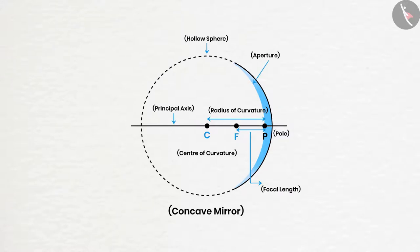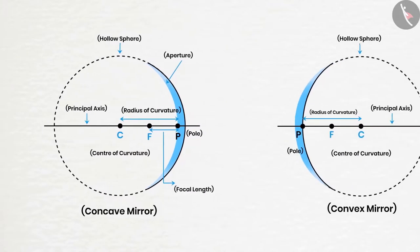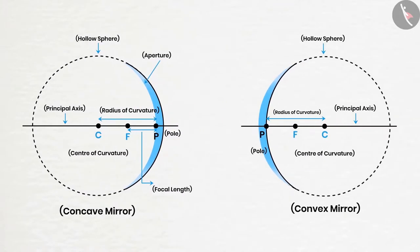One should keep in mind that radius of curvature is twice the focal length. Like focus, all these points lie in front of the concave mirror and at the back of the convex mirror.